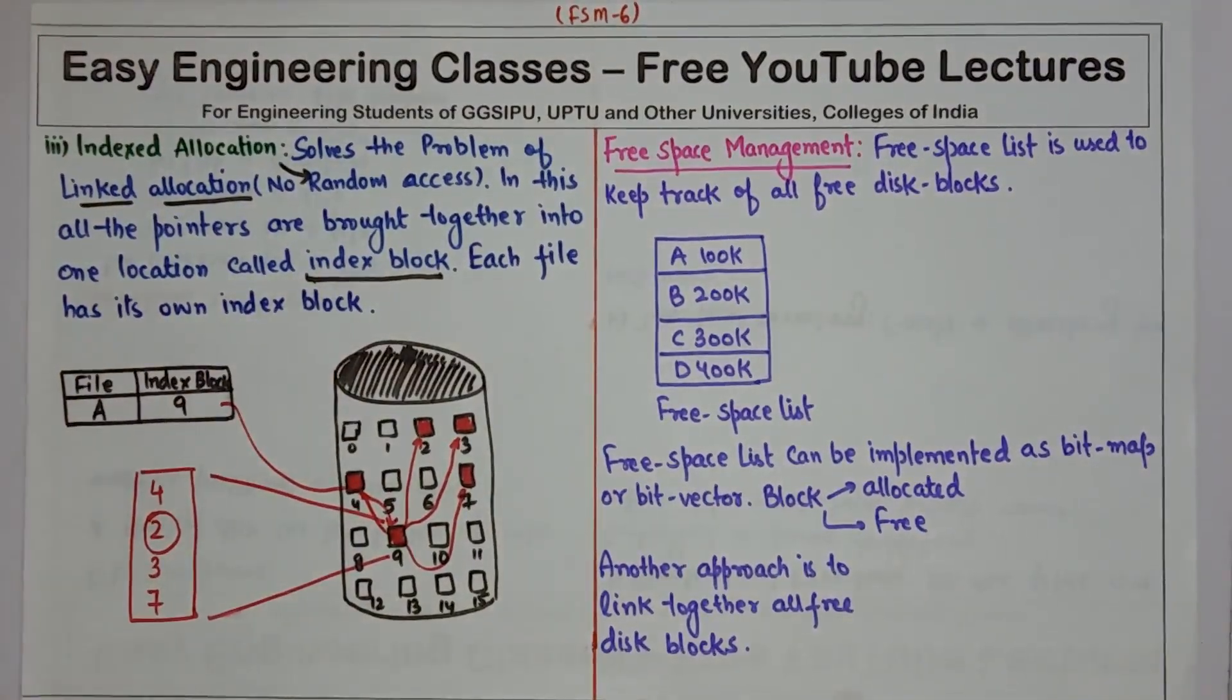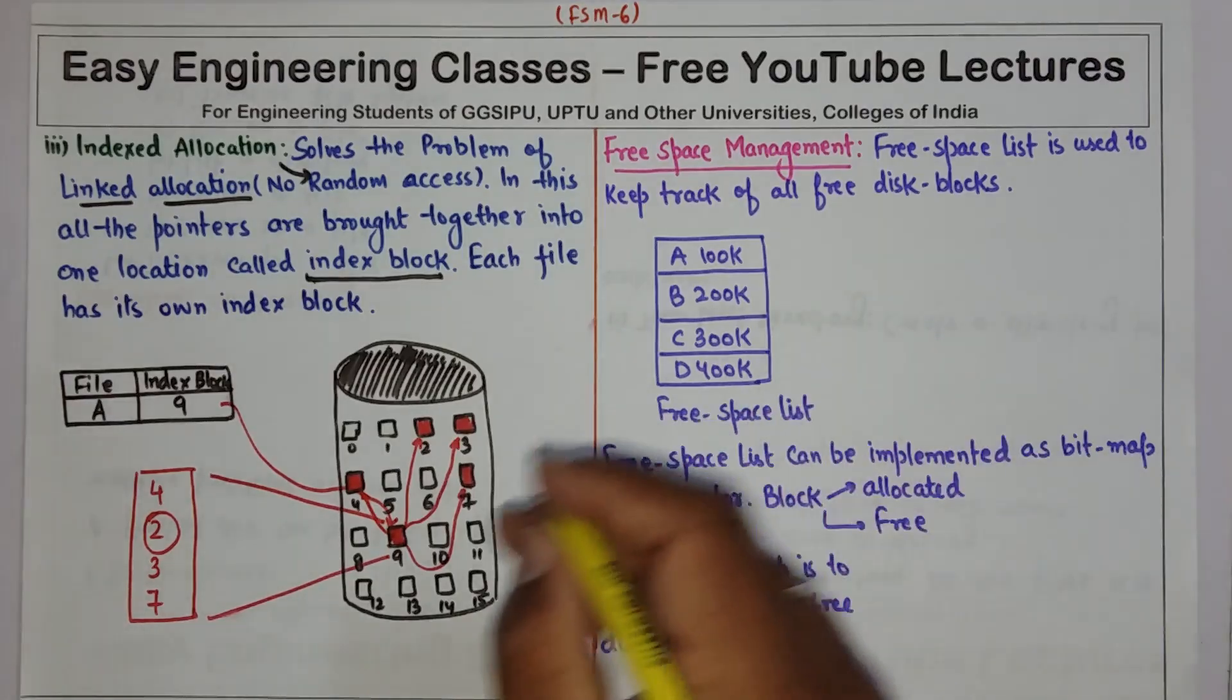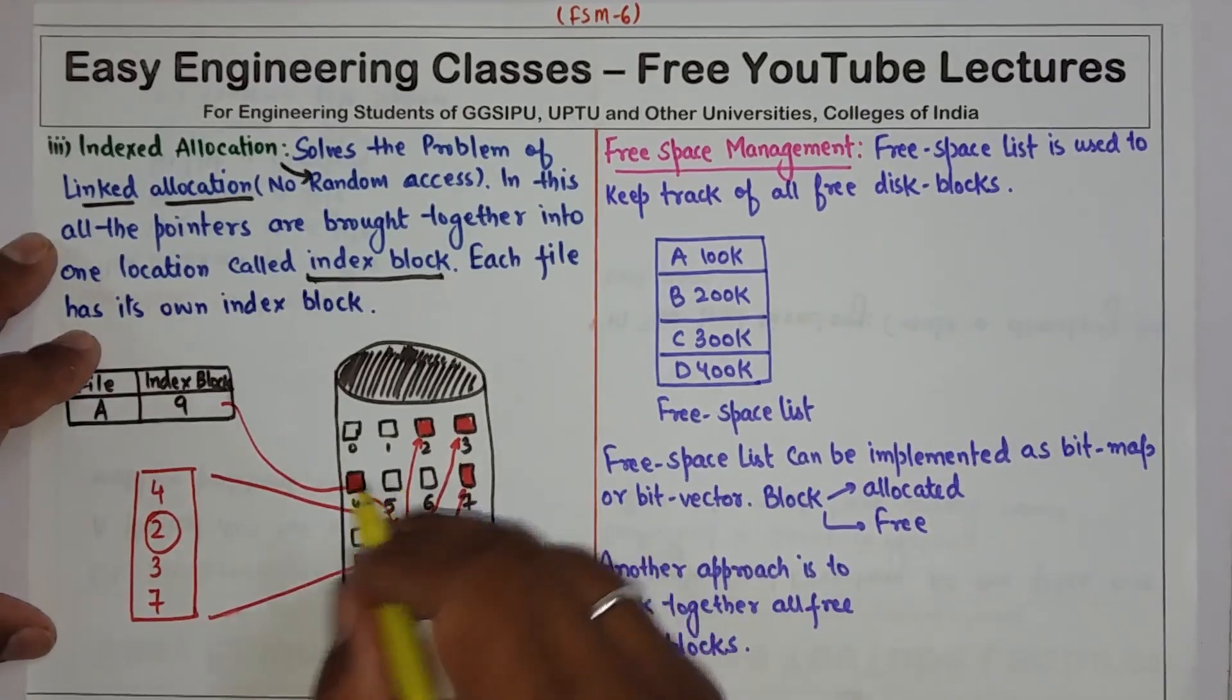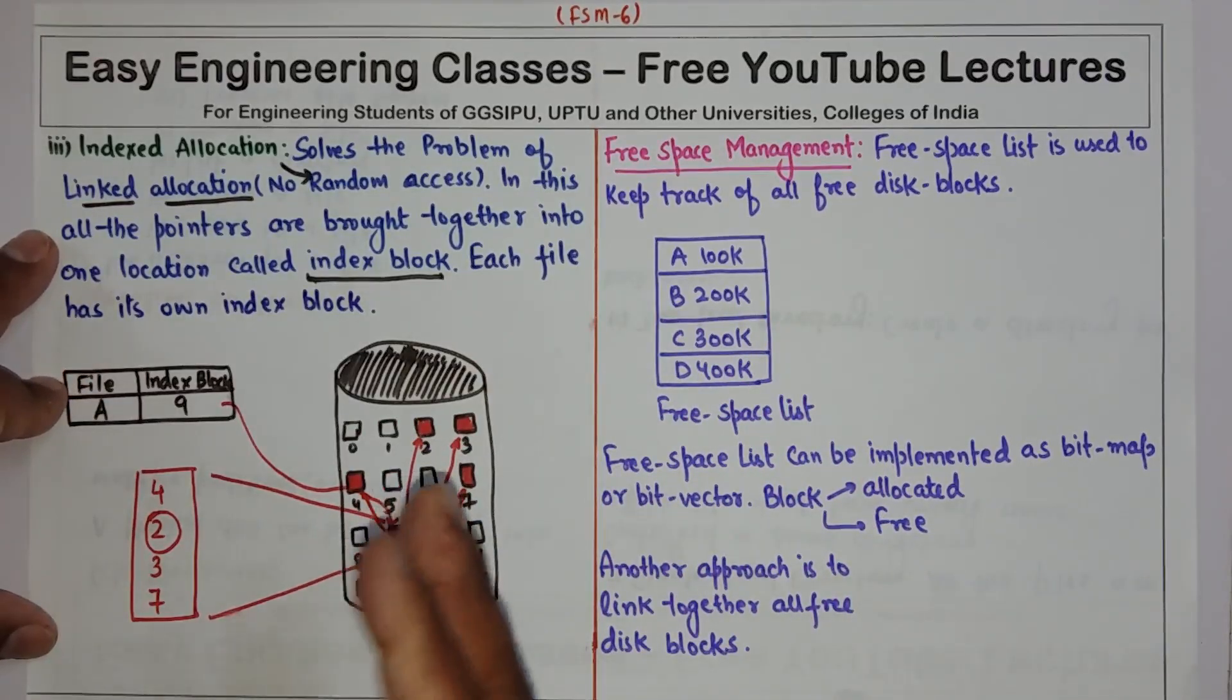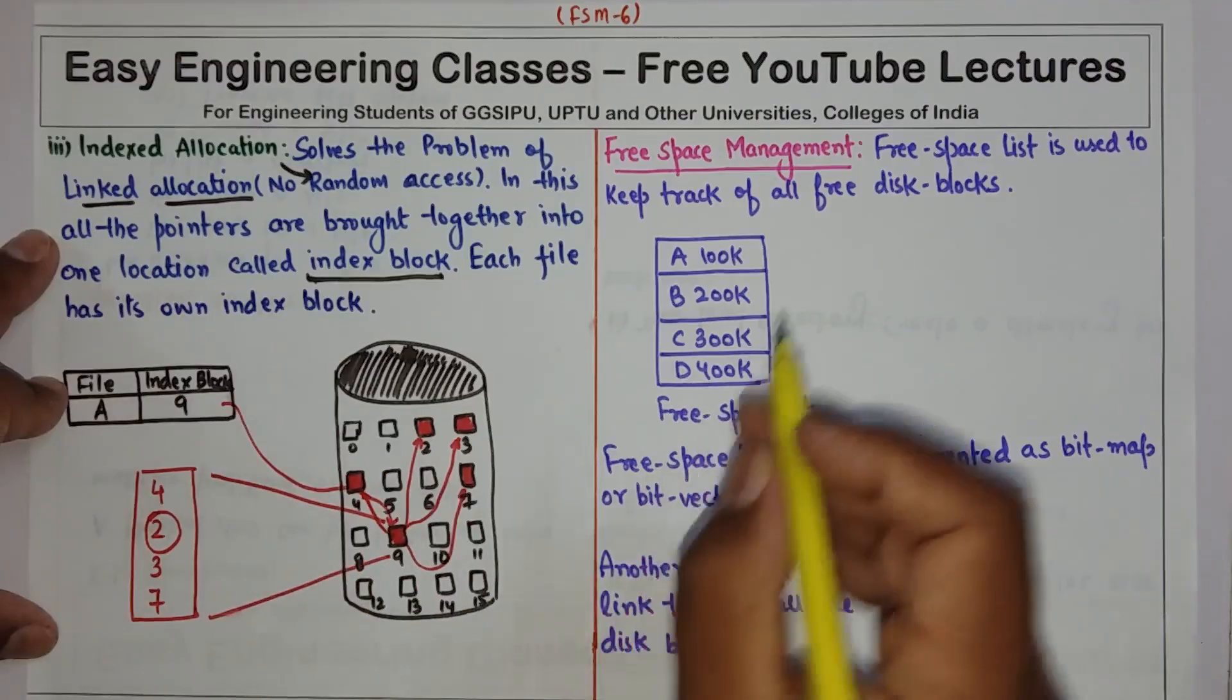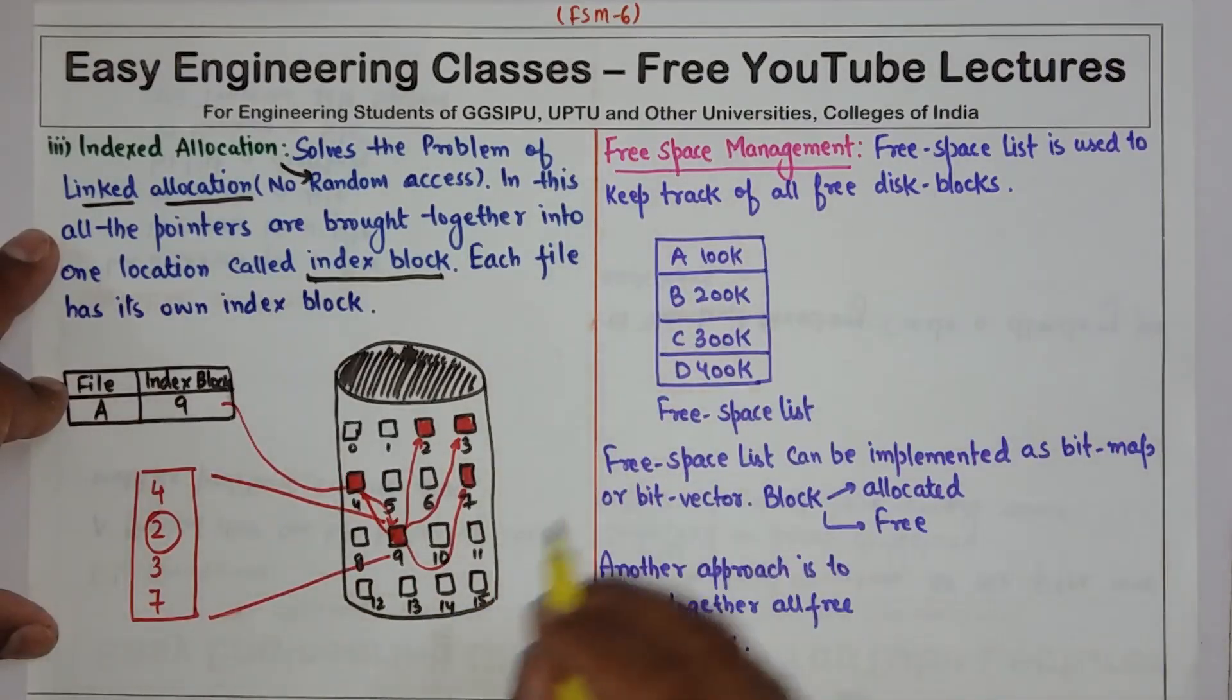Hello everyone, in this video we are going to see free space management. This is the continuation of the previous video. As we have seen, there are certain blocks which get allocated, and once the file work is completed and the file is deleted, that block is also freed. So we need to have a free space management to track which blocks are free.